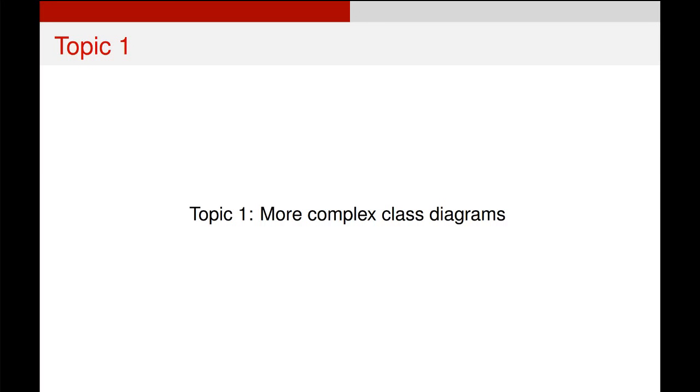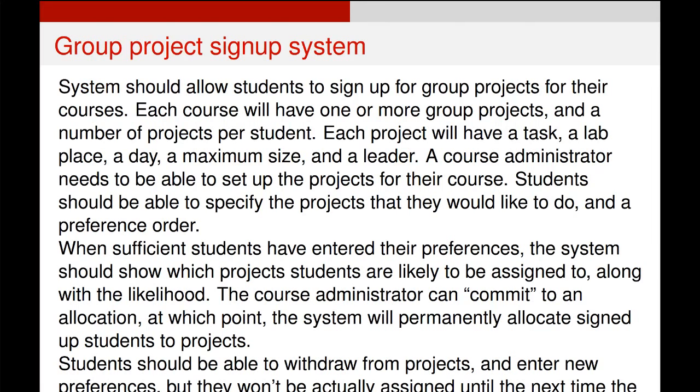Alright, now we're going to take one more look at making class diagrams, and this time we're going to use a more complex example. You can see my slides online, so I won't leave this one up, but this is a description of a group project system where students are enrolled in a course, and that course has a bunch of projects, and students can sign up to projects, and they also get to pick which projects they want to be attached to.